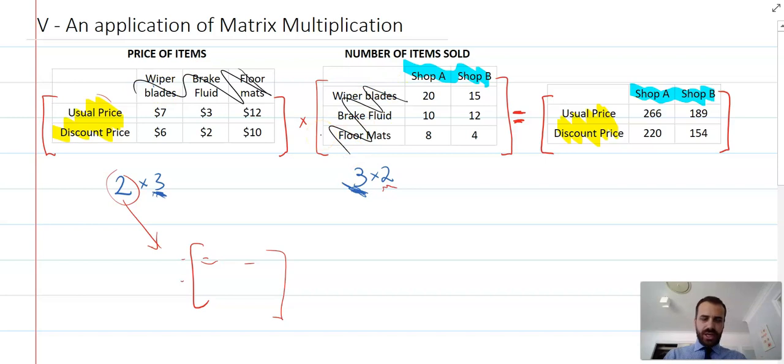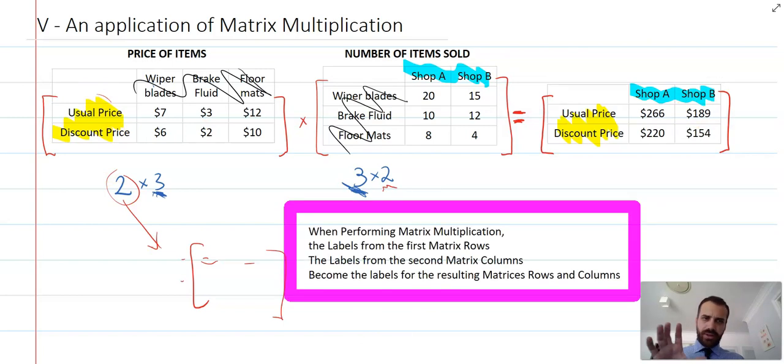It just says that Shop A would make 266 dollars if they sold those items at their usual prices. They would only make 220 dollars if they sold those items at the discount. And similar for Shop B, right?